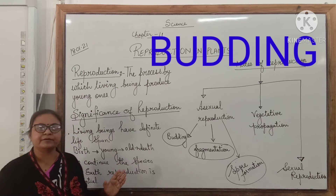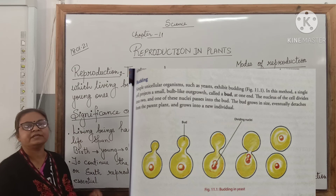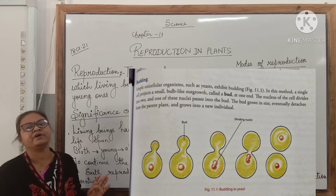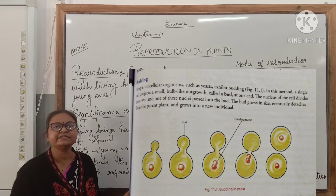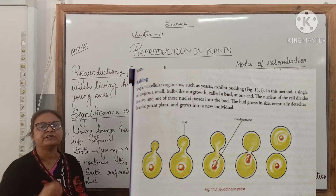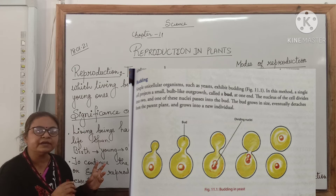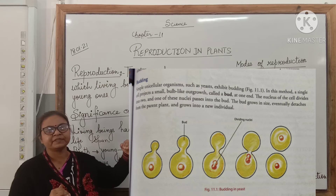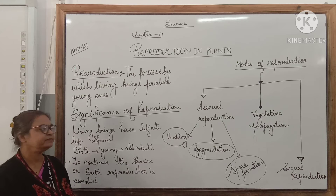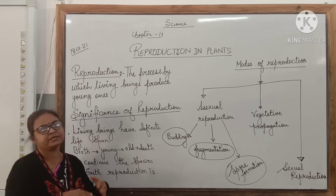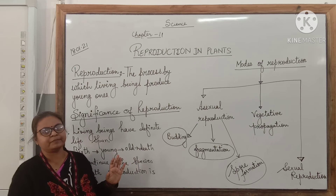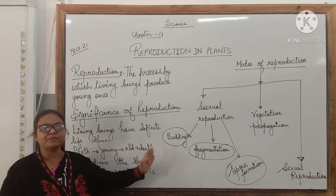In the case of budding, the most common example is the fungus yeast. Yeast is a unicellular fungus — it is made up of only one cell. When it reproduces, that one cell develops a small projection, a small rounded structure, which grows and gets a nucleus from the parent. It then detaches from the parent and becomes an independent individual organism. Sometimes these buds may remain attached to the parent and grow there. This is called budding, which is very common in yeast.